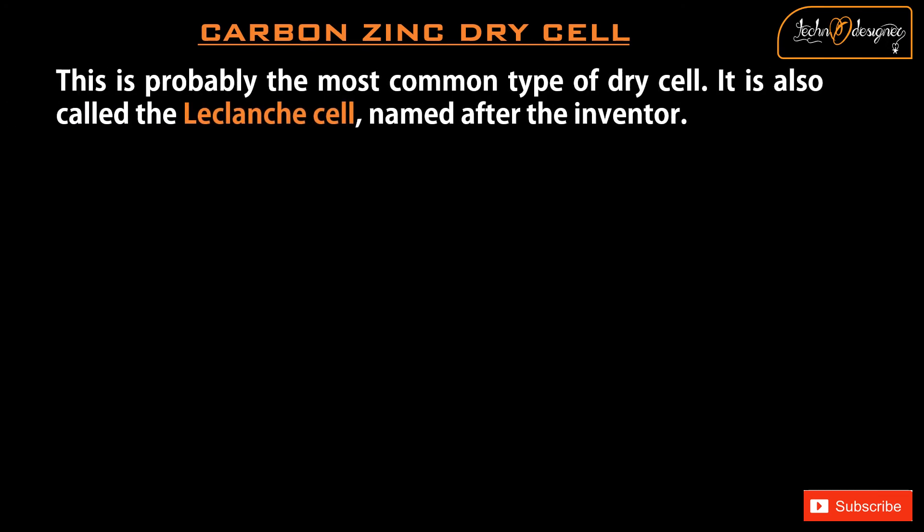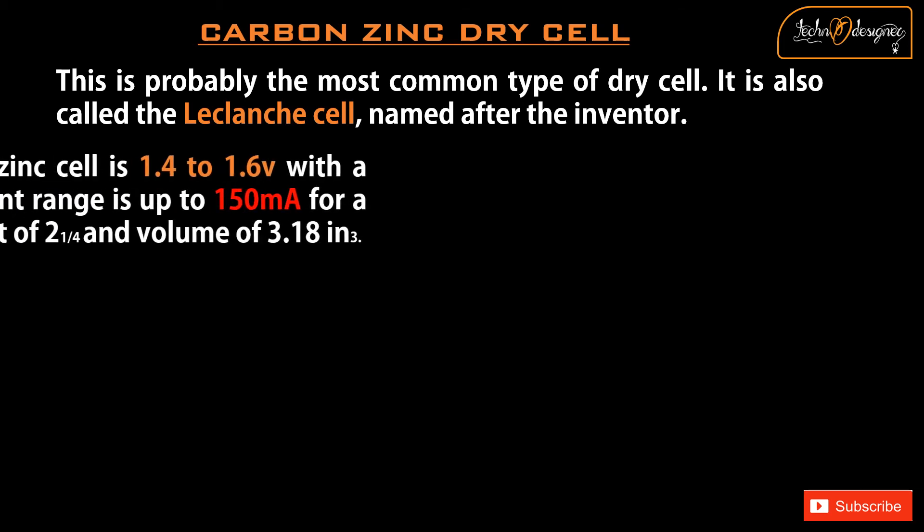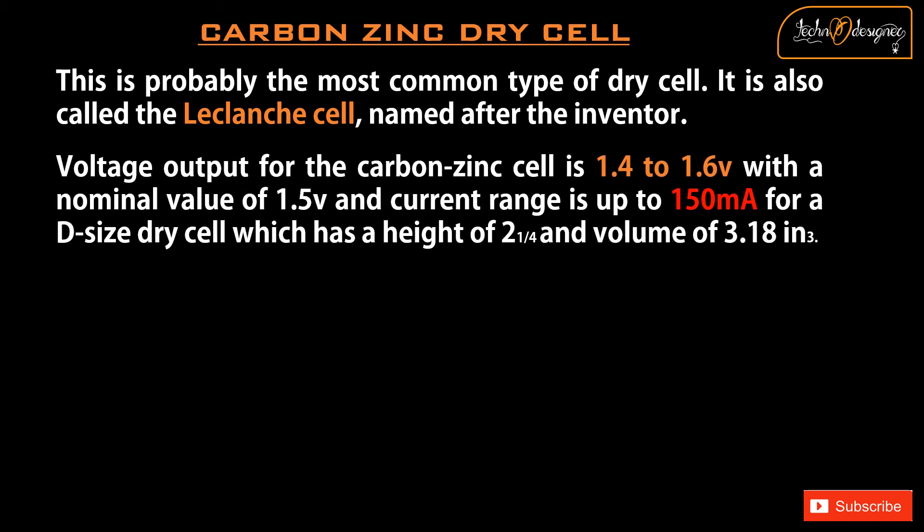Carbon Zinc Dry Cell: This is probably the most common type of dry cell. It is also called the Leclanche cell, named after the inventor. Voltage output for the carbon zinc cell is 1.4 to 1.6 V with a nominal value of 1.5 V, and current range is up to 150 mA for a D-sized dry cell which has a height of 2 and 1/4 inches and a volume of 3.18 cubic inches.